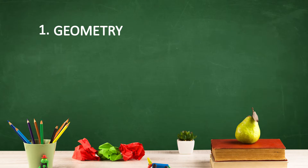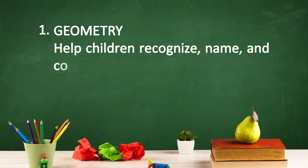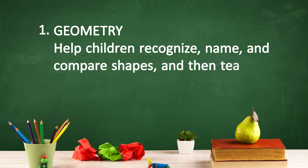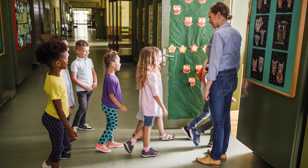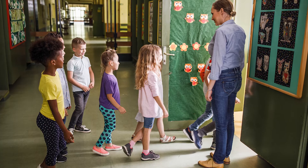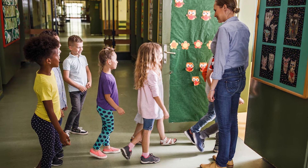When teaching the developmental progression, we want to help children recognize, name, and compare shapes, and then teach them to combine and separate shapes. First in the progression is to recognize shapes. It's important to help children do so in their everyday environment. Take children on shape walks and ask them to point out the shapes that they see, or ask children to bring in things from home that illustrate a particular shape, or to find and name shapes in the classroom.